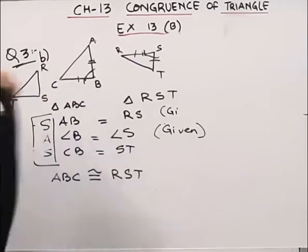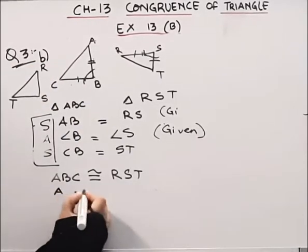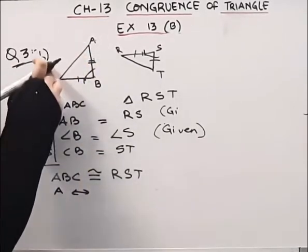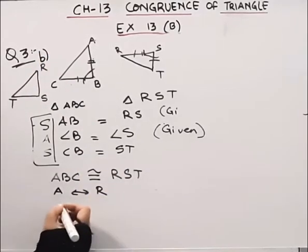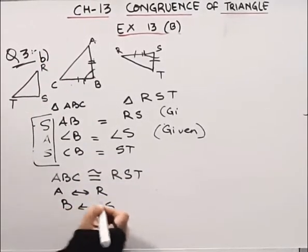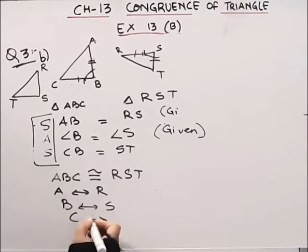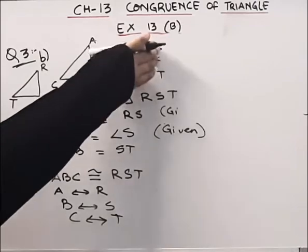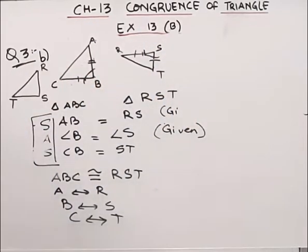This point is R. That means point A corresponds to R, point B corresponds to S, and point C corresponds to T. What I am going to do is make this figure overlap — that means it will be congruent.